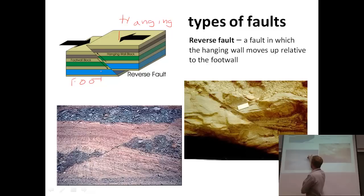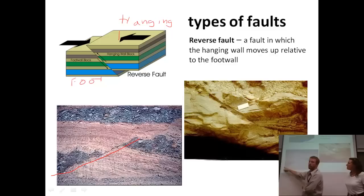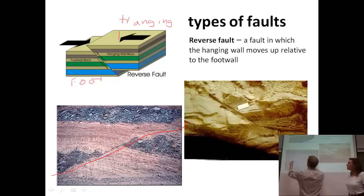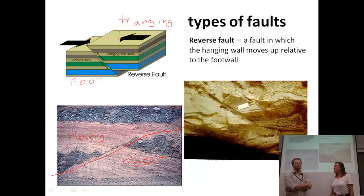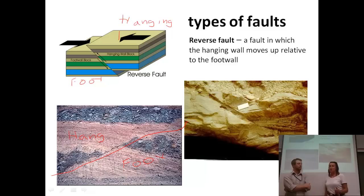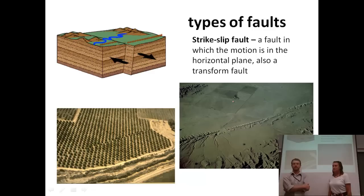For the second reverse fault photo, we draw the fault diagonally from upper right down to lower left — that's where the brittle deformation took place. There's a big pink band across the middle, and it's a lot lower on the right side, so the hanging wall moved up compared to the foot wall. Looking at the diagram, the arrows are moving towards each other — converging — so this is a compressional or convergent zone. That means a normal fault would typically form in a divergent or tensional environment. In fact, in places like the East African Rift, you can see a lot of normal faulting right now.